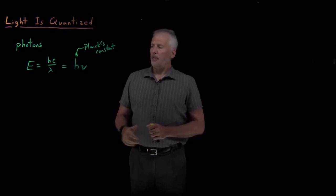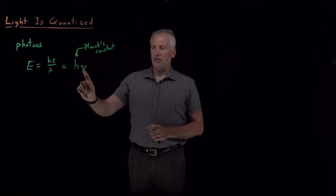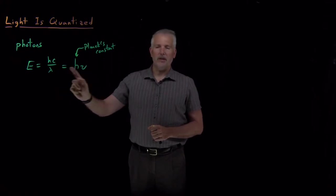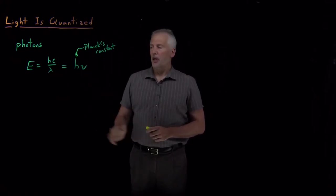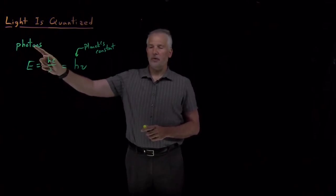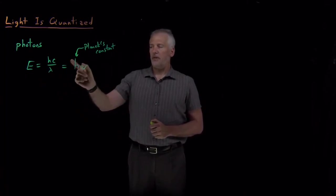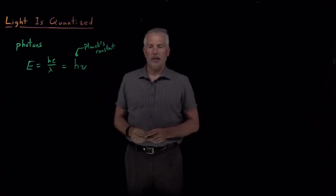So perhaps the most common way of thinking about these equations is just as a relationship between frequency and wavelength. Those are inversely proportional to one another. But the actual meaning of these equations is that the energy of one individual particle of light, one photon of light, is this value H times nu, or HC divided by lambda.